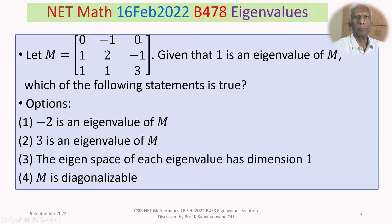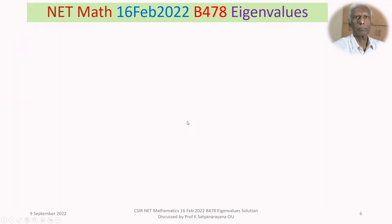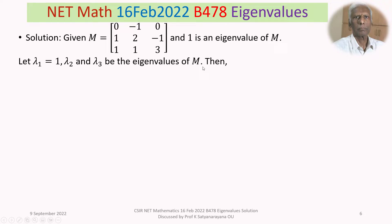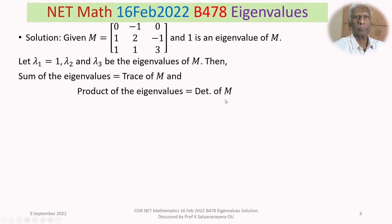We are given a 3 by 3 matrix and it is given that 1 is an eigenvalue of M. We need to find all eigenvalues, discuss diagonalizability, and determine eigenspace dimensions. The sum of eigenvalues equals the trace of M, and the product of eigenvalues equals the determinant of M.